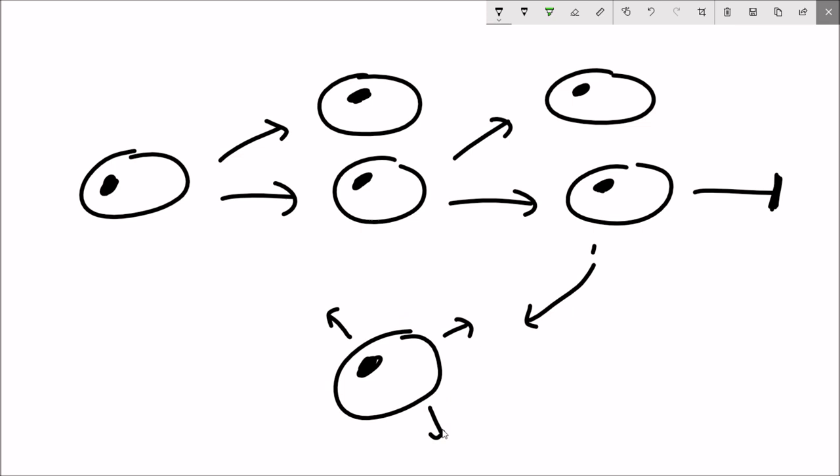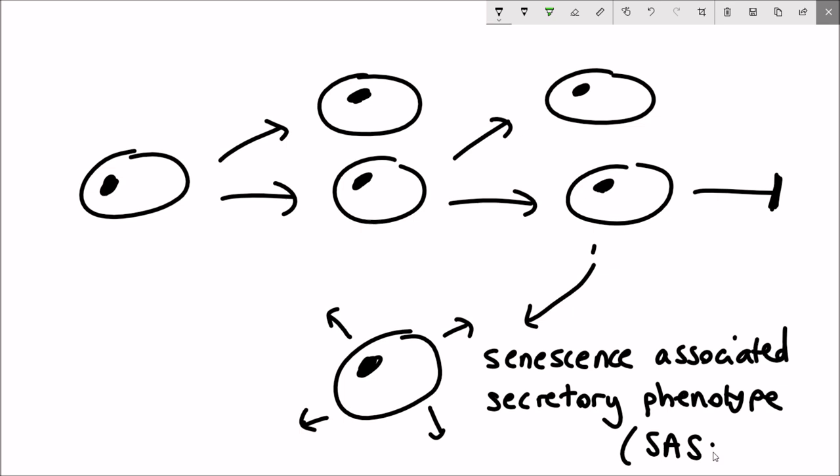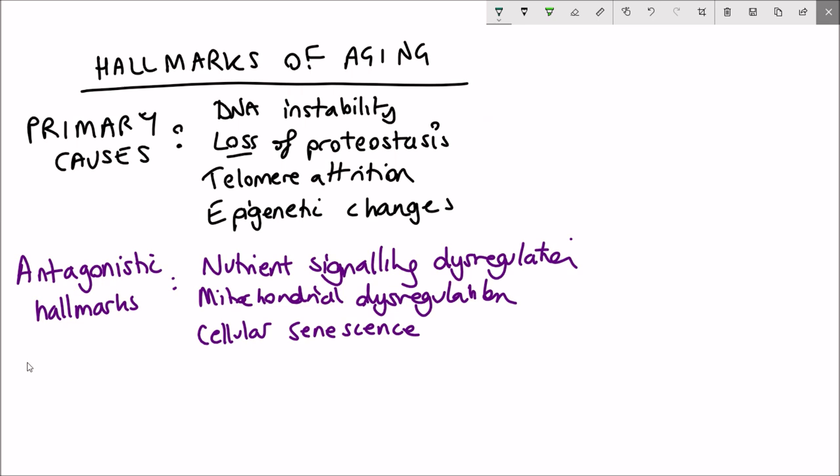Senescent cells have a secretory phenotype that can affect the surrounding cells as well. And so ageing has been shown to correlate with an increase in the number of senescent cells.